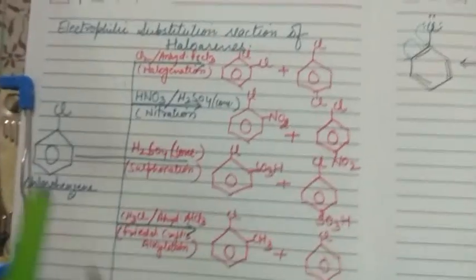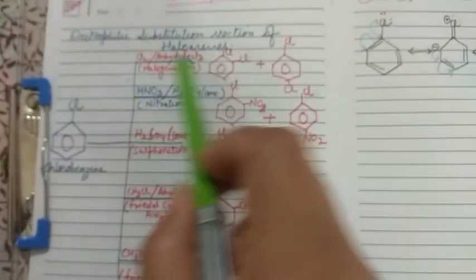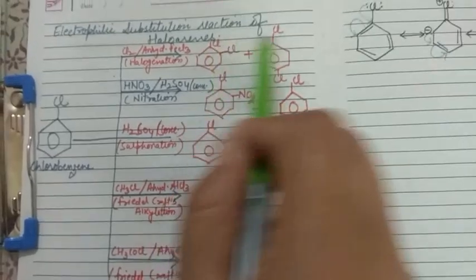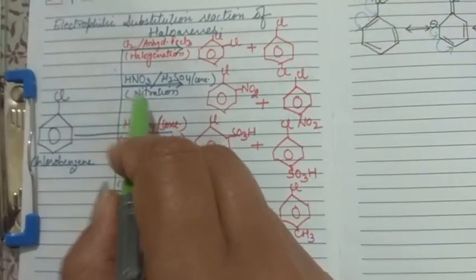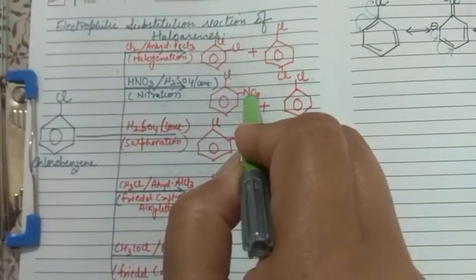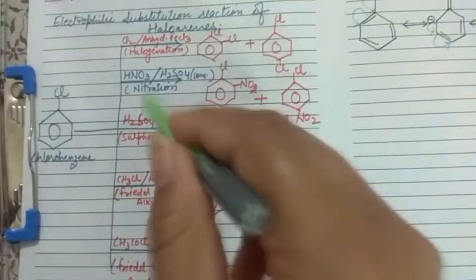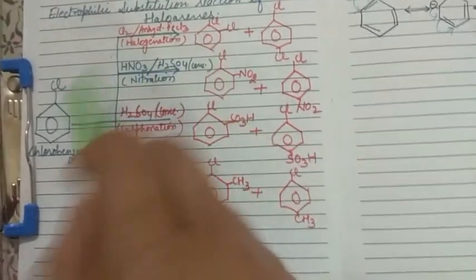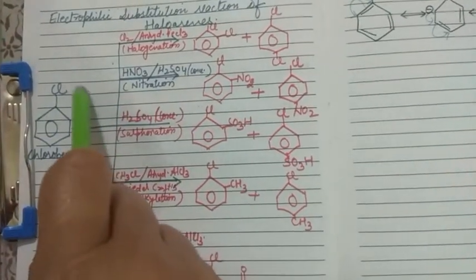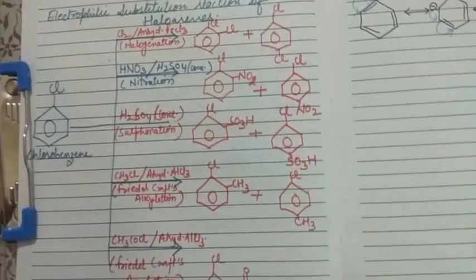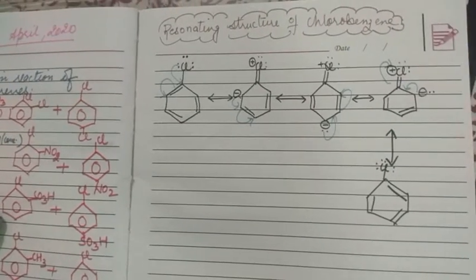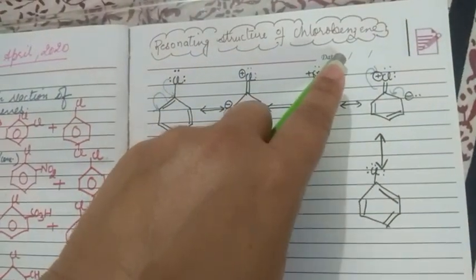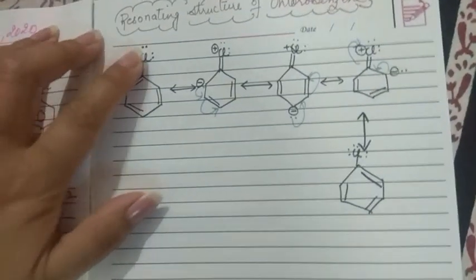Now we have to explain why these groups — for example, in halogenation, chlorine attacks at the ortho and para position; in nitration, the nitro group attacks at the ortho and para position. Why does this happen? For this, we have to see the resonating structures of chlorobenzene. As we see in the resonating structure of chlorobenzene, this is chlorobenzene.